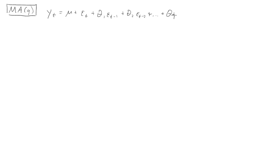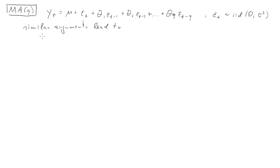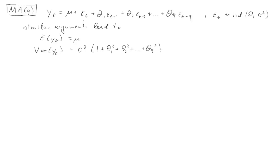Now let's state the order-Q MA process, with terms epsilon_t, epsilon_{t-1}, epsilon_{t-2}, up to epsilon_{t-Q}. The error term epsilon_t is IID with variance sigma squared as before. Using very similar arguments as for MA1, the expected value of the MAQ process equals mu, and the variance equals sigma squared times (1 + theta_1 squared + theta_2 squared + ... + theta_Q squared). You should be able to derive that yourself.